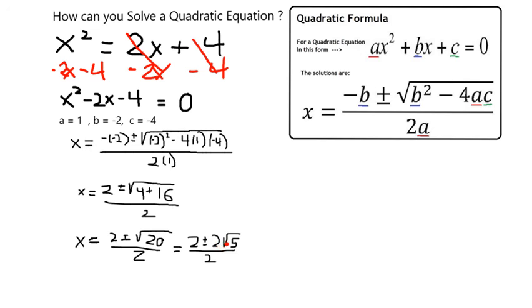Which is going to leave me with 2 plus 2 radical 5 over 2. So those 2s are now going to cancel out, and I'm left with my solutions in simplest radical form, which is going to be 1 plus or minus radical 5.